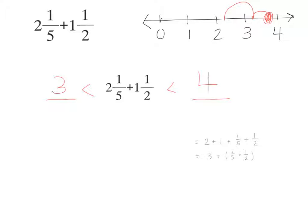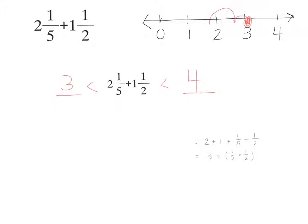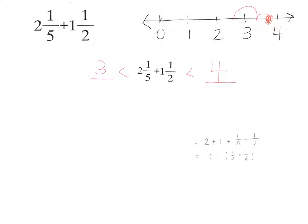Okay, so a way to write that is 3 is going to be less than whatever the answer is, the sum of 2 and 1/5 and 1 and 1/2, which will be less than 4. It's important to know this so that when we do this we can say, oh, is our answer reasonable or not?